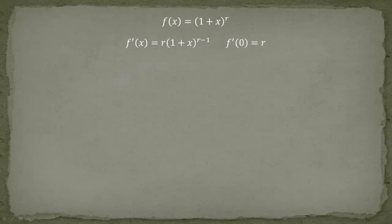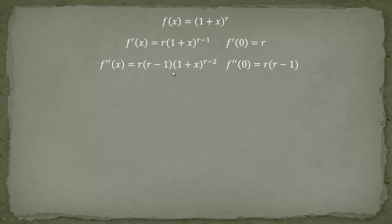We find the first derivative by using the power rule: r comes in front and we subtract 1 from the power. If we plug in x equals 0, we get (1 + 0) to the power (r - 1), but 1 to any power is always 1, so we are left with r only. Taking the second derivative, we get r times (r - 1) times (1 + x) to the (r - 2). Plugging in 0 again gives 1, so we are left with the product r(r - 1).